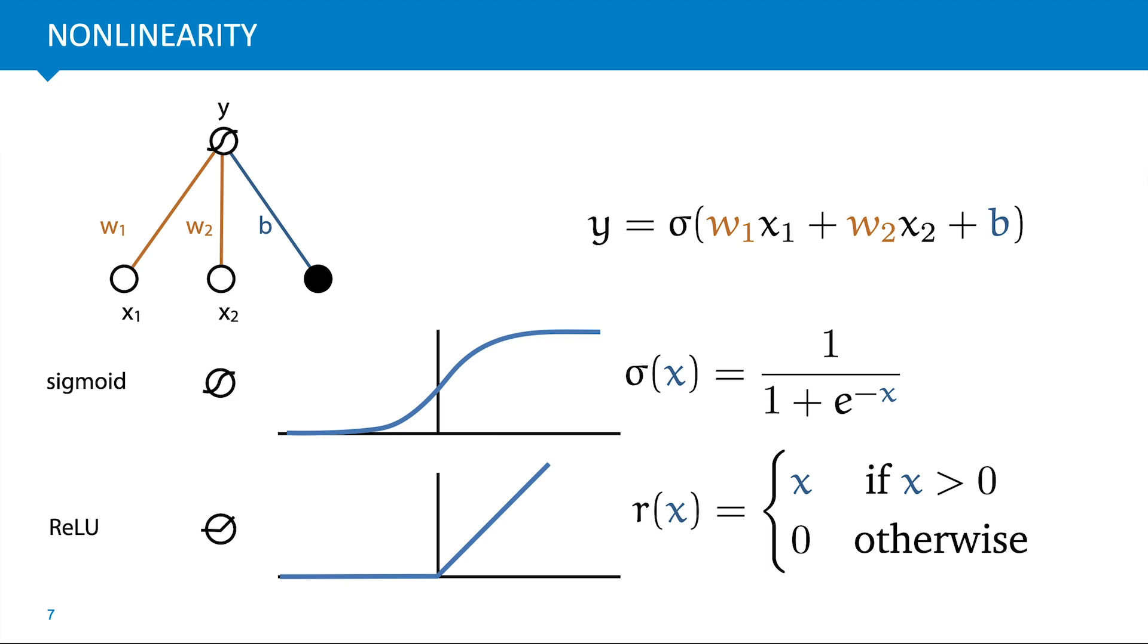Here are two relatively common examples of non-linearity. First we see the sigmoid, which is this s-shaped function given by this formula here. Below that we see the ReLU. We won't go into why these are shaped the way they are yet. For now, just take it at face value that you need these non-linearities in order to make the network work. If we insert them, the network becomes more powerful than just a sequence of linear operations.